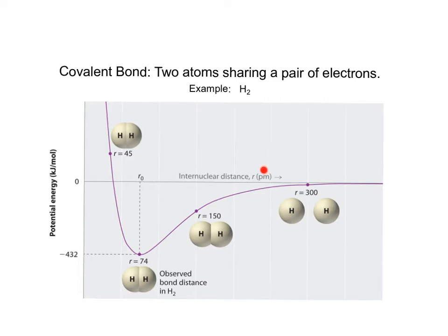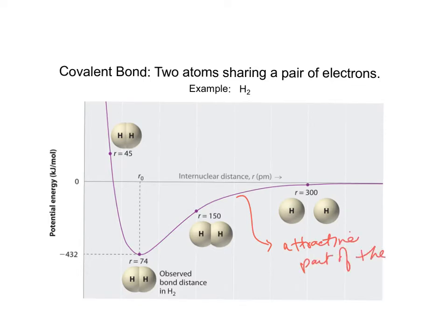The distance is in picometers, so this is 10 to the minus 12 meters. At 300 picometers there's just a little interaction. As they get closer, at about 150 picometers you can see some interaction between the two hydrogens. The covalent bond is really just the force between the two atoms. As the two hydrogens get closer together, energy is being given off in this process — that's the attractive part of the potential energy curve.